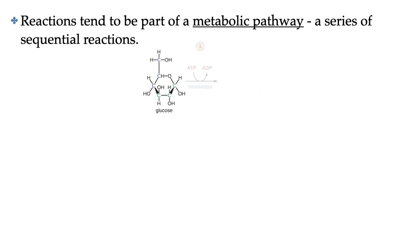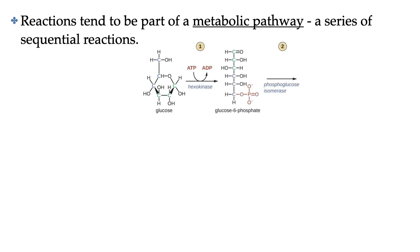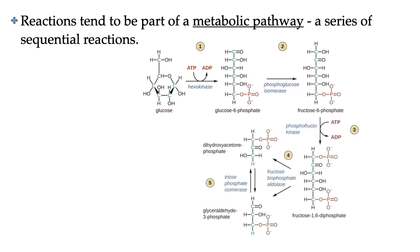A metabolic pathway is a series of chemical reactions that happen in sequence, so that the products of one reaction become a reactant in another or several other reactions. This image actually only shows you the first five out of ten reactions in glycolysis. And glycolysis is just the start of a longer metabolic pathway called cellular respiration, which we'll study in a lot more detail in this unit.